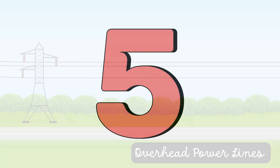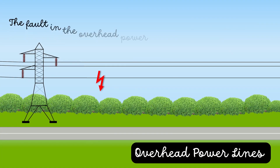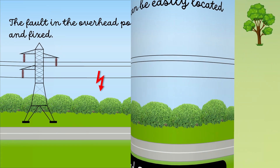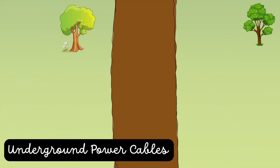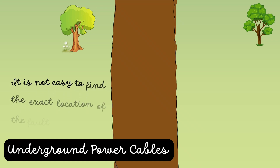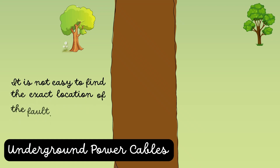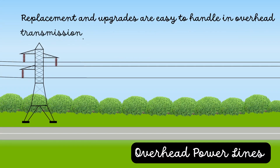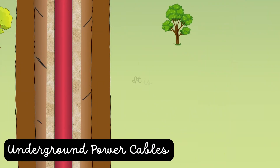The fault in the overhead power lines can be easily located and fixed. Since the underground cables are buried, it is not easy to find the exact location of the fault. The replacement and upgrades are easy to handle in overhead transmission; however, in underground transmission, it is a difficult process.